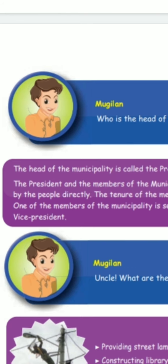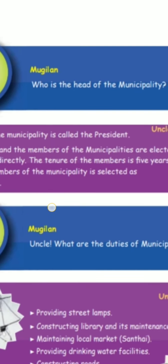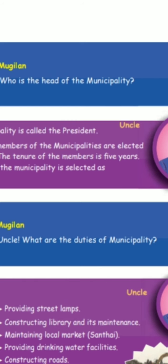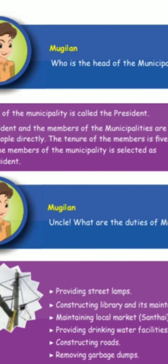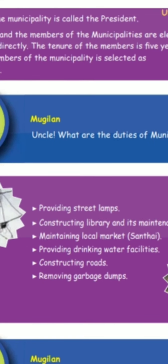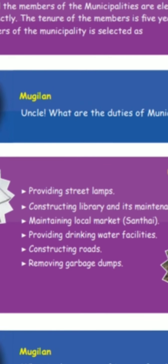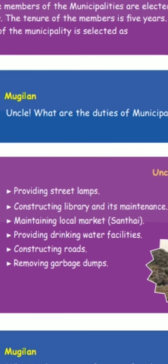Mugilan asked: 'Uncle, what are the duties of the municipality?' His uncle explained: providing street lamps, constructing a library and maintaining it, and maintaining a local market — also called a Sunday market.